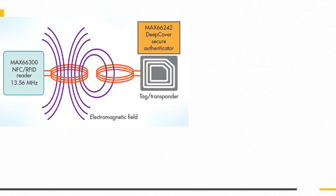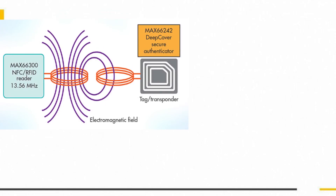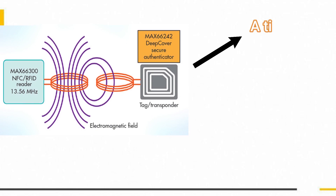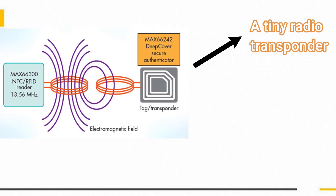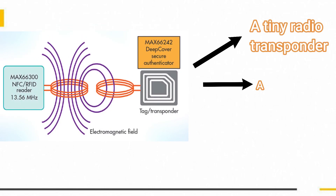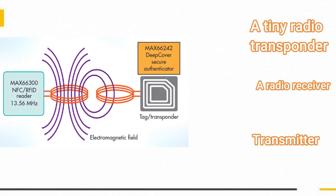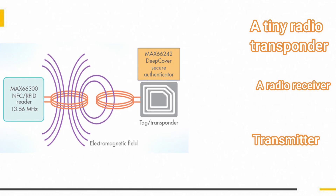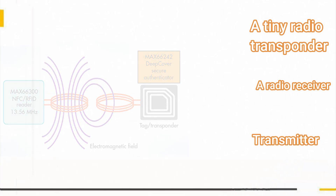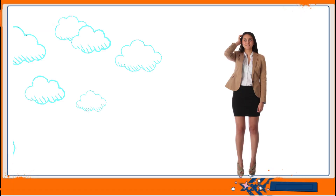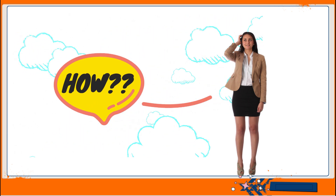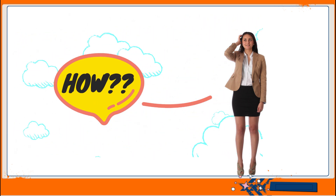RFID uses electromagnetic fields to automatically identify and track tags attached to objects. An RFID system consists of a tiny radio transponder, a radio receiver, and transmitter, with a working distance of 10 to 15 meters. It has two main components: the reader and the tag.